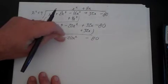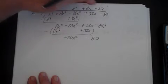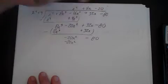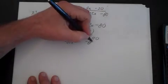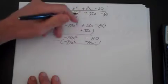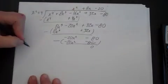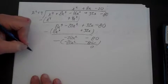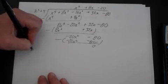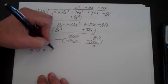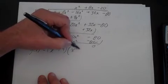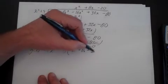x² goes into -20x², -20 times. Multiplying gives -20x² - 80. Subtracting: -20 minus -20 is 0, and -80 minus -80 is 0. So g(x) can be factored into (x² + 4)(x² + 8x - 20) with no remainder.